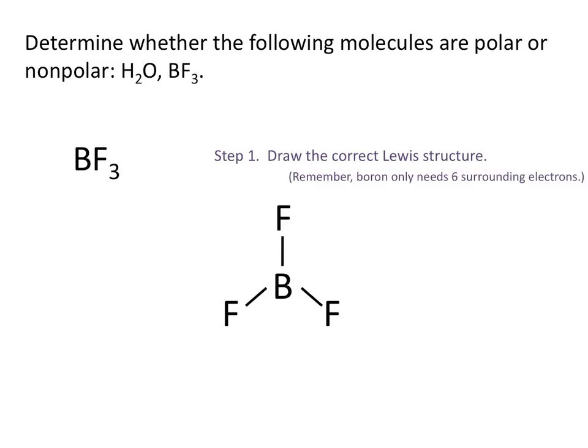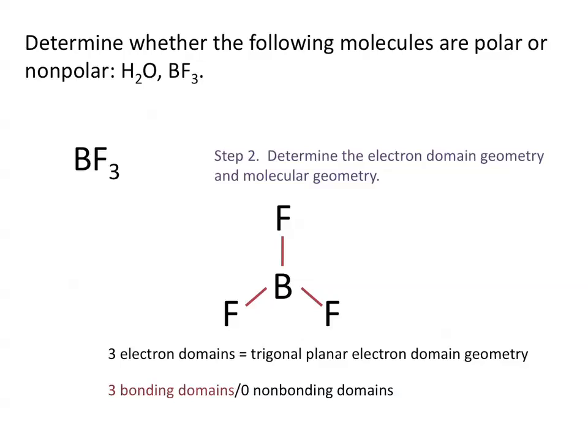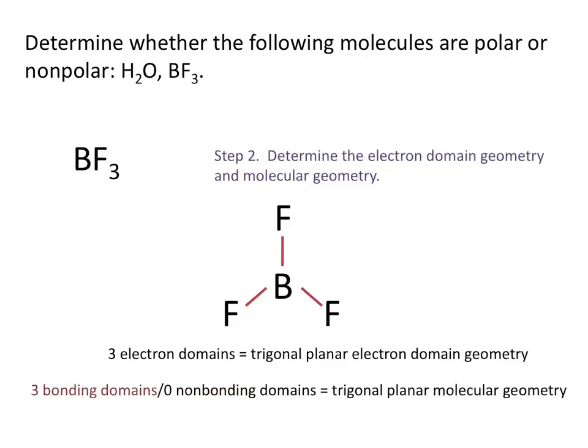Let's look at the molecule BF3. First, we need to draw the correct Lewis structure. Remember, boron is able to violate the octet rule and needs only six surrounding valence electrons. For step two, we determine the electron domain geometry and the molecular geometry. There are three electron domains, which means the electron domain geometry is trigonal planar. Three of the electron domains are bonding domains and zero are non-bonding domains, so the molecule also has a trigonal planar molecular geometry.